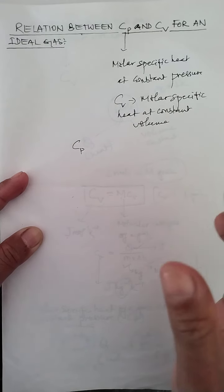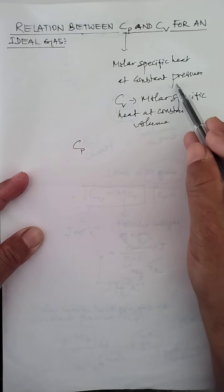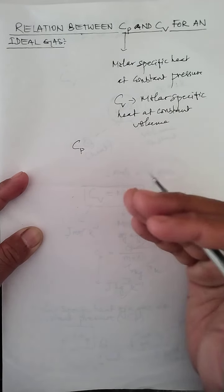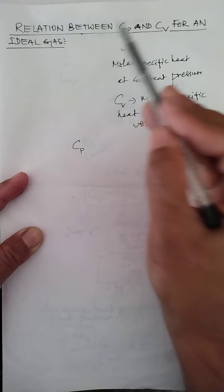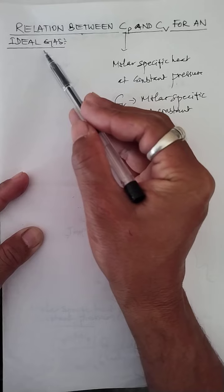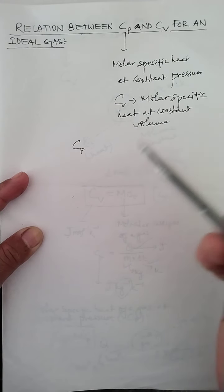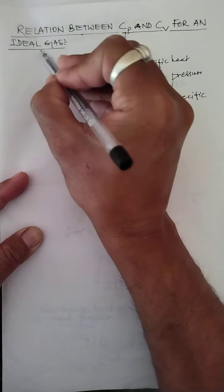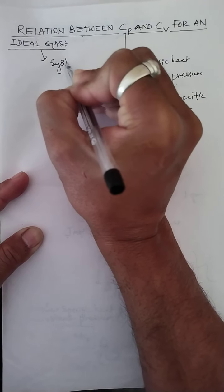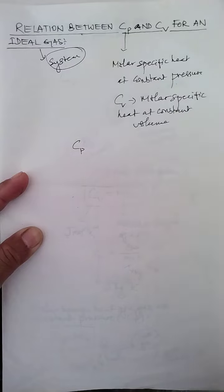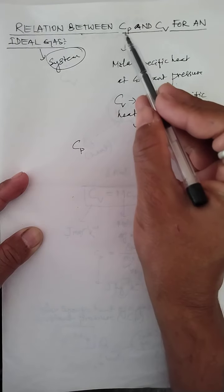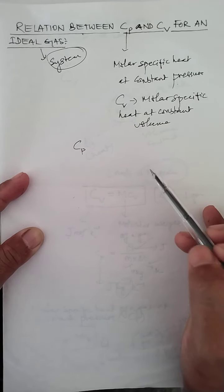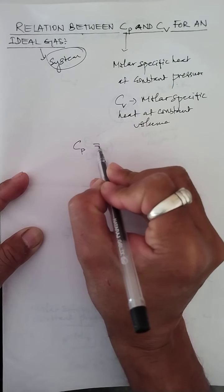Molar specific heat can be defined under two different conditions: one is at constant pressure, another is at constant volume. This relation which we are going to derive is for an ideal gas — a perfect gas which follows Boyle's law, Charles's law, the gas equation, and Avogadro's law. Ideal gas is our system here.